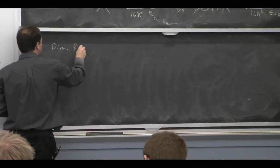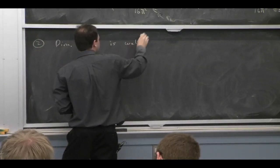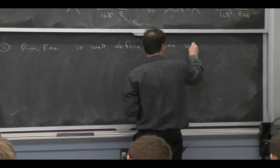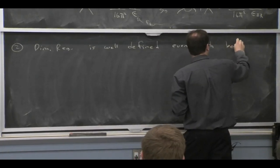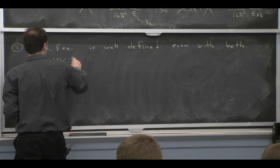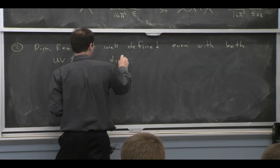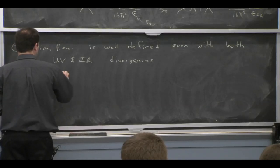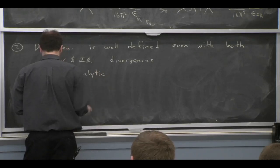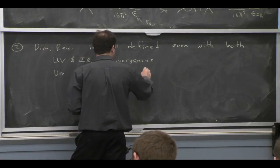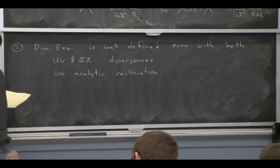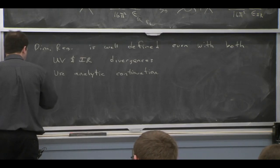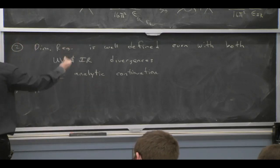Another thing that can be confusing about dim-reg is that it does this, that it regulates both UV and IR poles. And even though it's doing that, and even though you need different values of epsilon if you want to do that, it's actually still a well-defined procedure, even in the presence of UV and IR poles, even if they're both in the same integral. And basically, you're using analytic continuation here. So let me give you a little example, which is not exactly related to this, but will allow me to show you both how you use analytic continuation and how you could think about separating UV and IR poles.